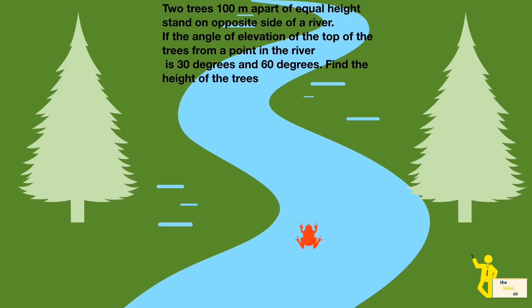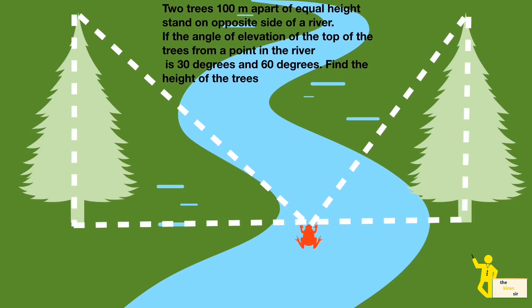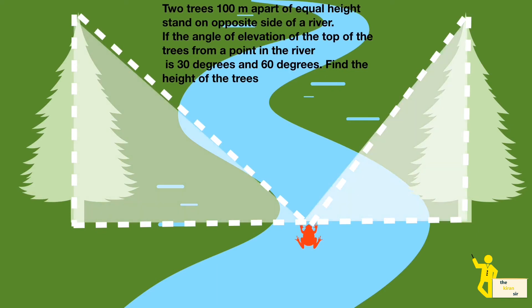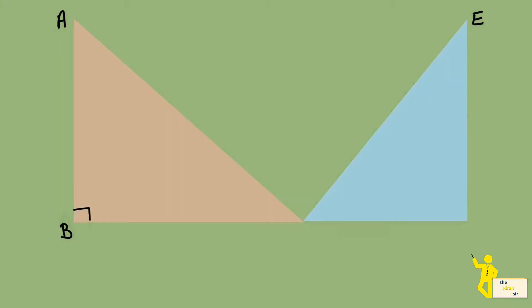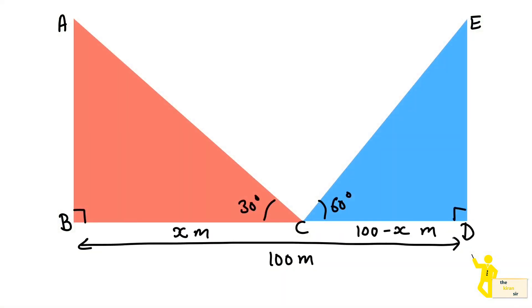The fourth type of question involves two poles or trees of the same height. The angle of elevation from a point in between to the tops of both trees is 30 degrees and 60 degrees, and the height is not given. These two triangles don't have a common base. Take one distance as x meters and the other as 100 minus x meters, solve both triangles individually. Since the heights AB and AD are equal, substitute and solve to get the answer.